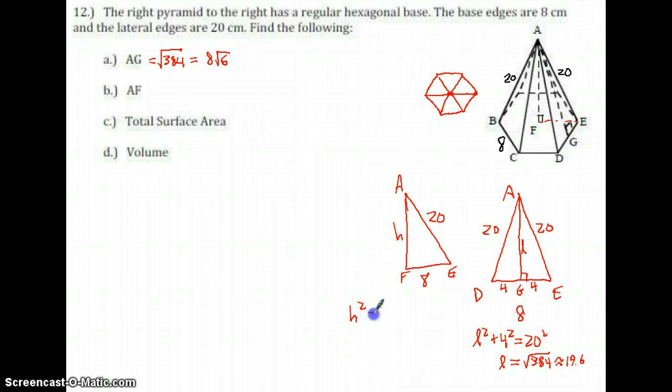This is a little bit nicer. H squared plus 8 squared equals 20 squared. So from that, I'm going to find out that H is supposed to be the square root of 336, which is not nice.